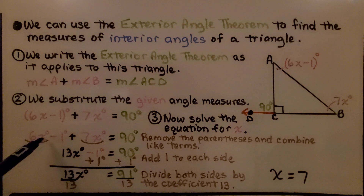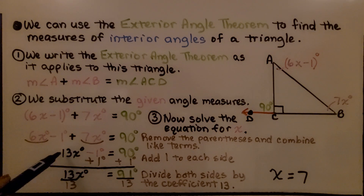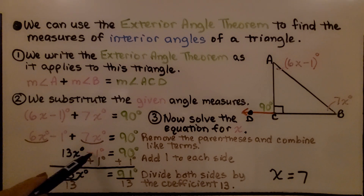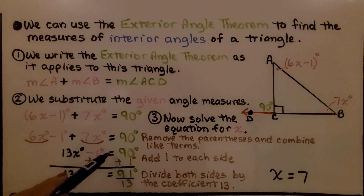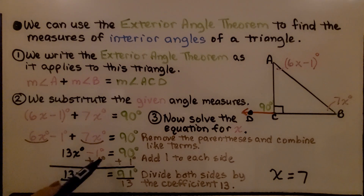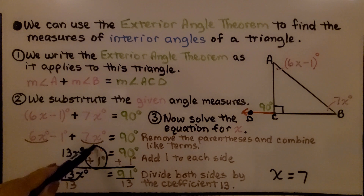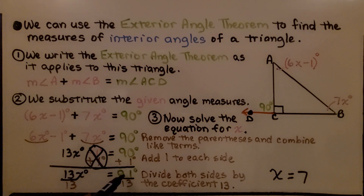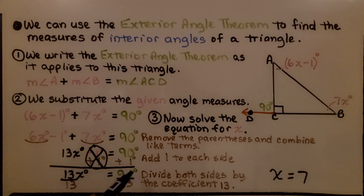6x and 7x are like terms, so we get 13x degrees minus 1 degree, equal to 90 degrees. Since this is minus 1 degree, we add 1 degree to both sides of the equal sign. That creates a zero pair and eliminates it, giving us 91 degrees on the right side. Now we have 13x degrees equal to 91 degrees.